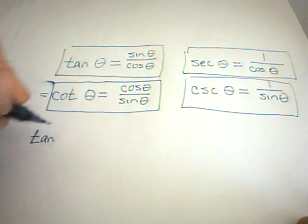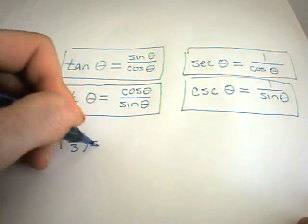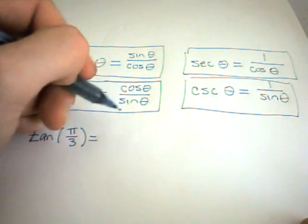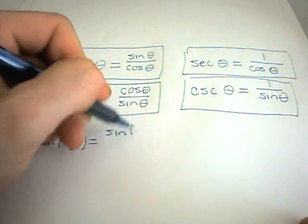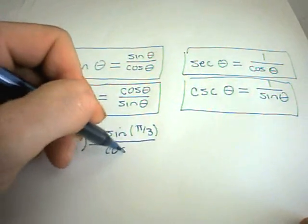So suppose someone said, evaluate tangent of pi over 3. Okay, using the formula up here, it says tangent of whatever's inside is going to equal sine of that divided by cosine of that.